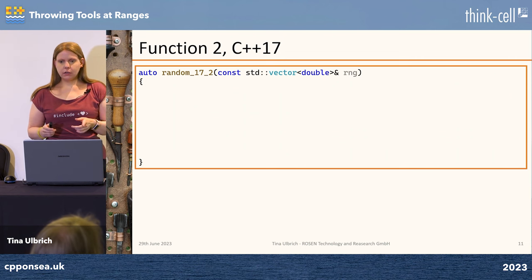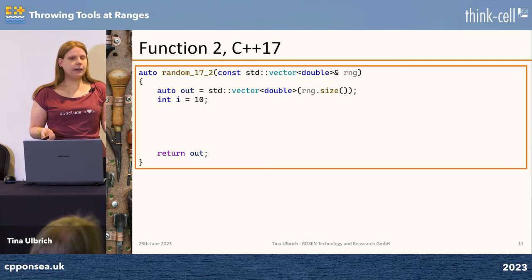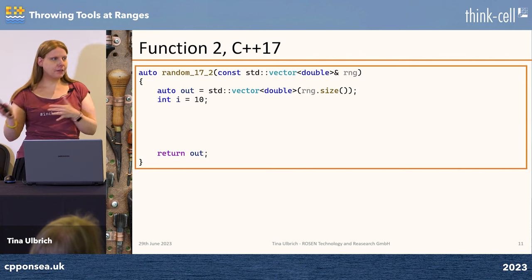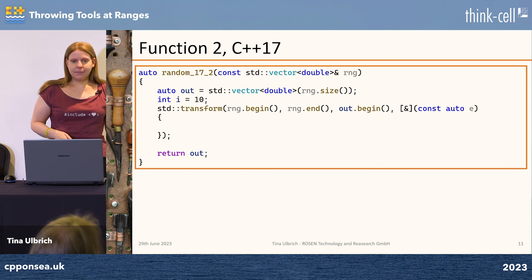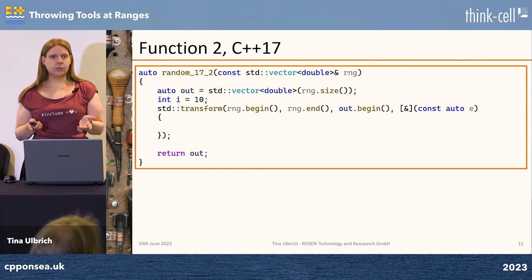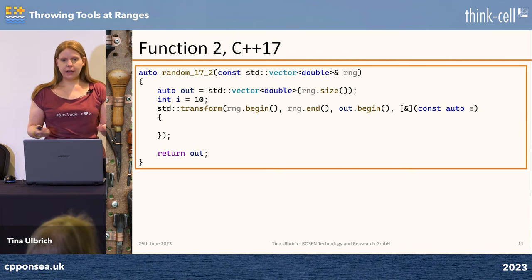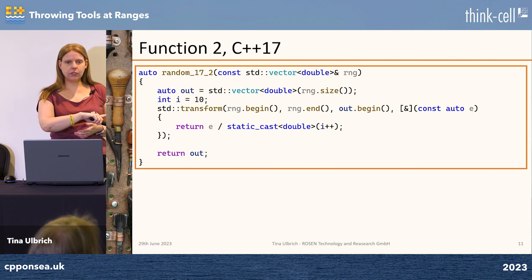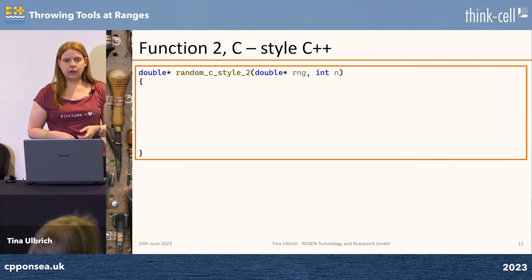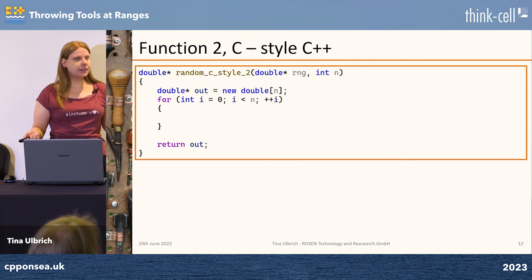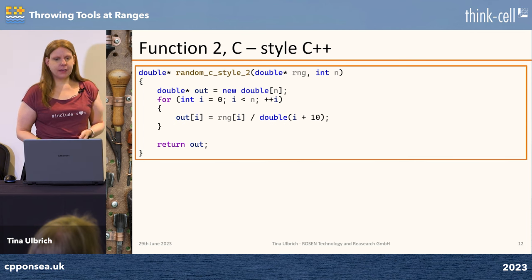When I write this in C++17, I'm defining my output. This is my usual pattern: I create some kind of vector, fill it with something, and then return the vector. I'm using transform, and since we're on C++17 we don't have the range-based version yet, so I need to use the iterators. I optimized away the second range here and just used an index. For C-style, again some new memory on the heap, an index loop, and we're doing the same kind of calculation.